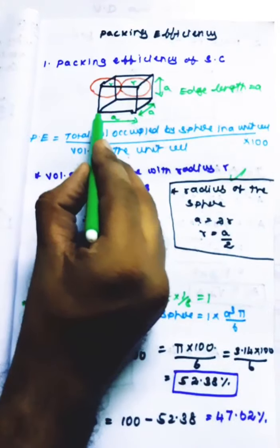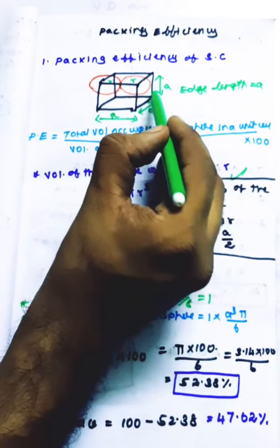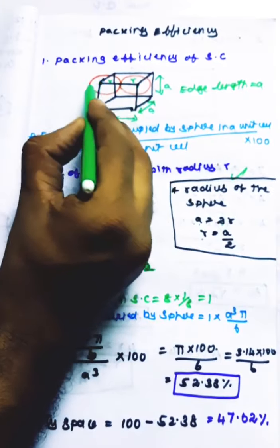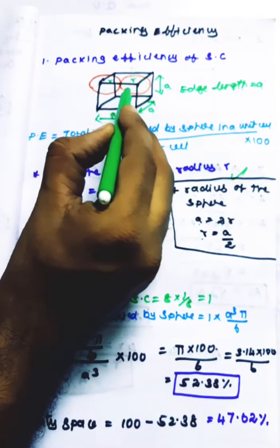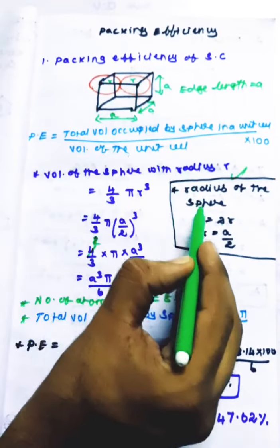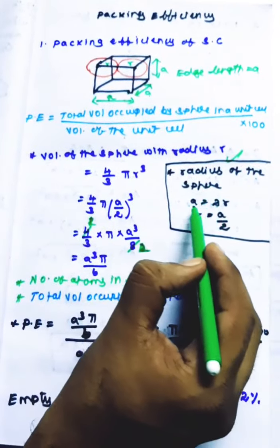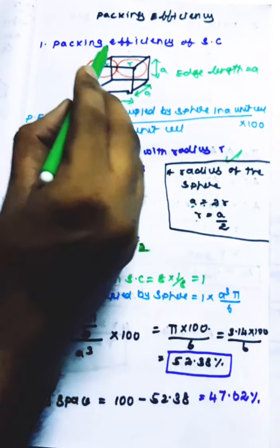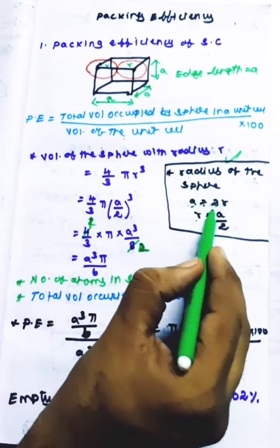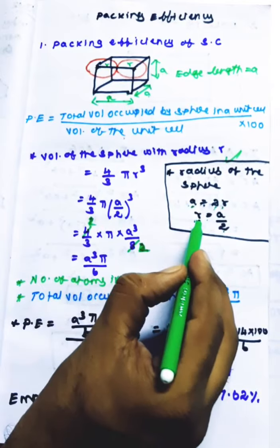So the distance between these two corners is the edge length. In two corners, the edge length is denoted as 'a'. The radius of the sphere: a is equal to 2r, so r equals a by 2. This is the radius of the sphere.